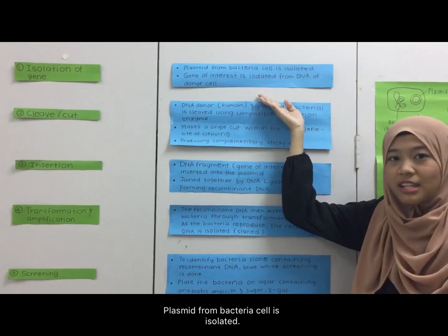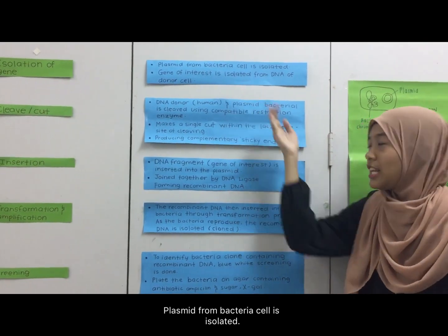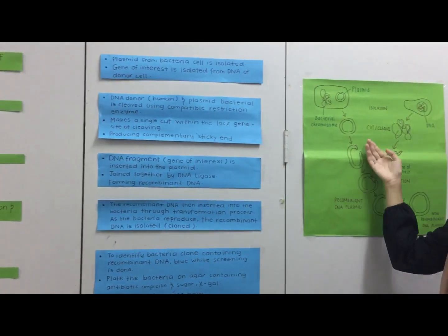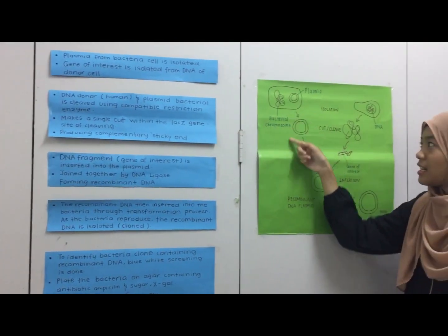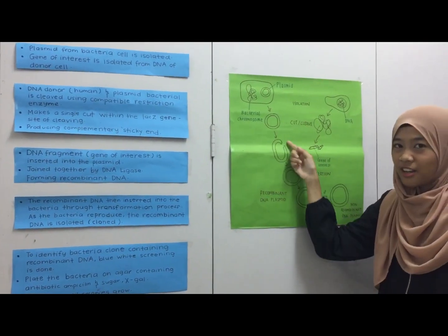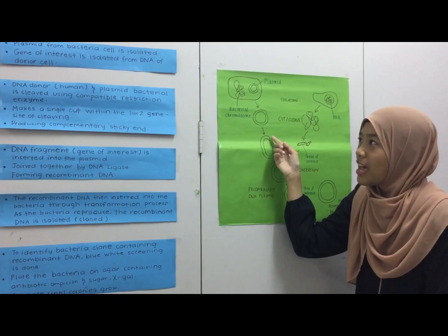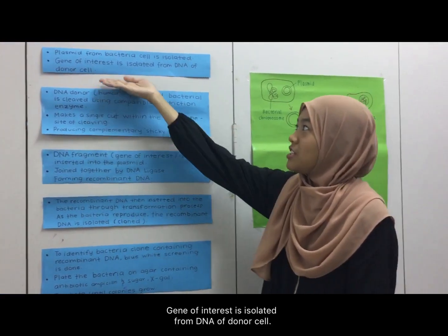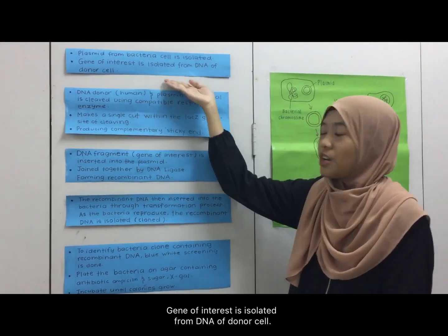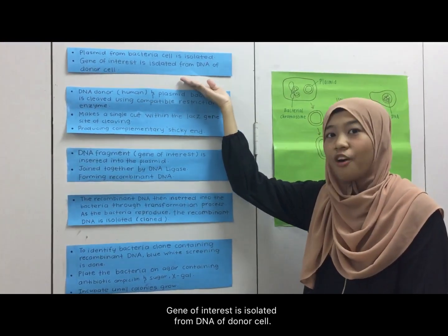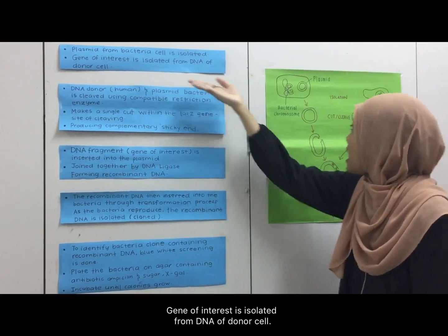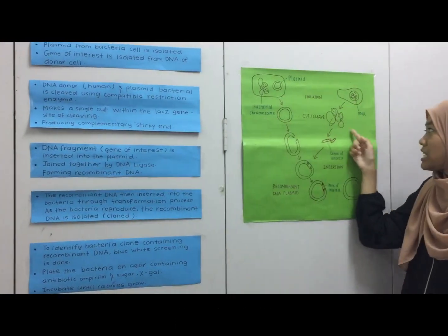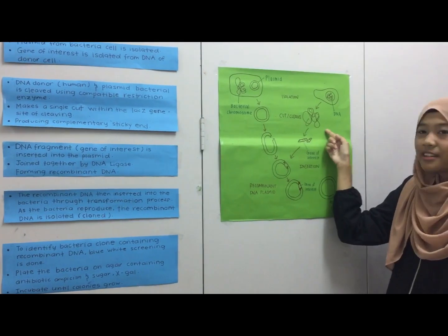The plasmid from the bacteria cell is isolated. The gene of interest is also isolated from the DNA of donor cells.